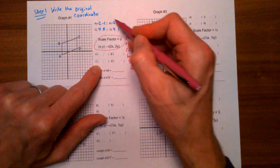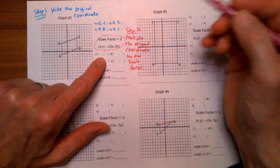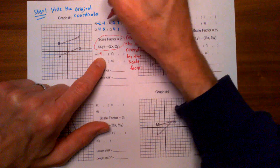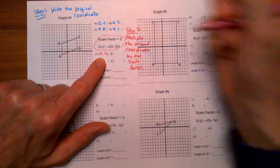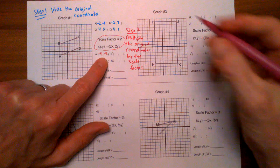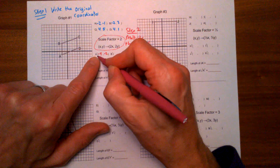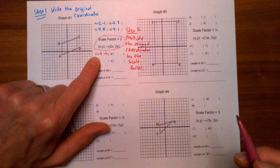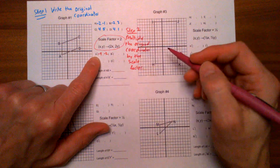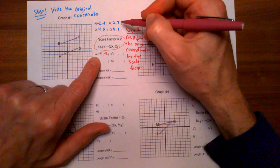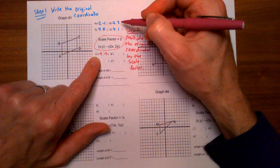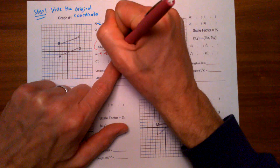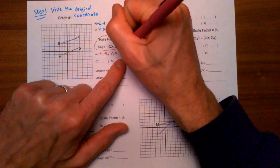Let's take these original coordinates and multiply them all by two. For point A: (-2) × 2 = -4 and (-1) × 2 = -2, so A' has coordinates (-4, -2). For point B: (-2) × 2 = -4 and 3 × 2 = 6, so B' is at (-4, 6).